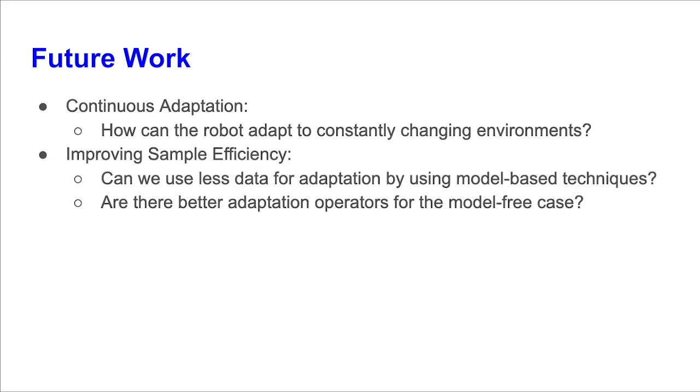In terms of future work, we consider two important objectives. One is continuous adaptation, where we ask how we can make the robot adapt to constantly changing environments. The other is improving sample efficiency, where we ask if we can reduce the number of rollouts required to perform adaptation by using model-based techniques, and whether there are any better adaptation operators than batch hill-climbing.